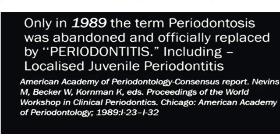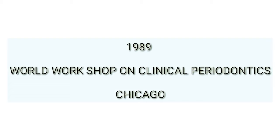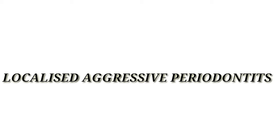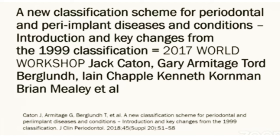This change was made in the American Academy of Periodontology consensus report by Nevins, Becker, and Korman in the proceedings of the World Workshop in Clinical Periodontics, Chicago, 1989. They also included the term 'localized juvenile periodontitis' as a sub-classification of periodontitis. Ten years later in 1999, Armitage et al. divided periodontal disease and conditions into two categories — chronic and aggressive periodontitis — and renamed localized juvenile periodontitis as localized aggressive periodontitis.